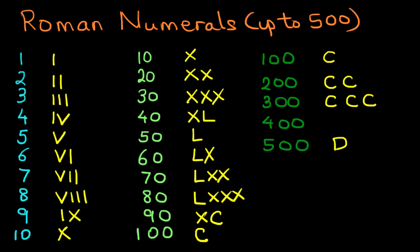So 400 is 100 less than or before 500. Let's just make a note of that. So 400 is 100 less than or you can say before 500. Therefore, it is CD.